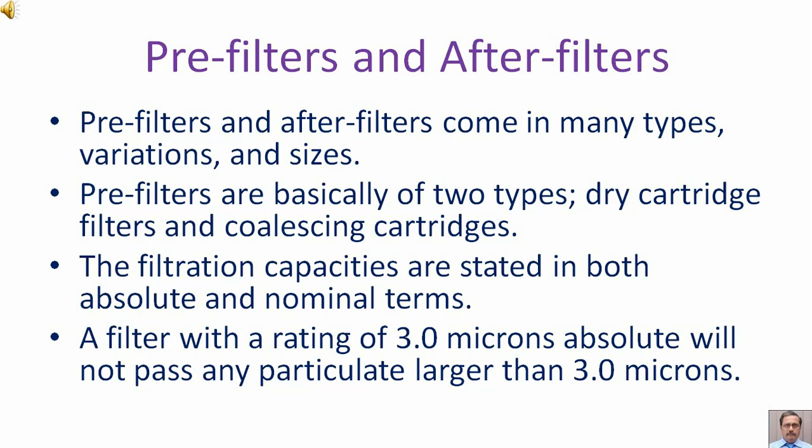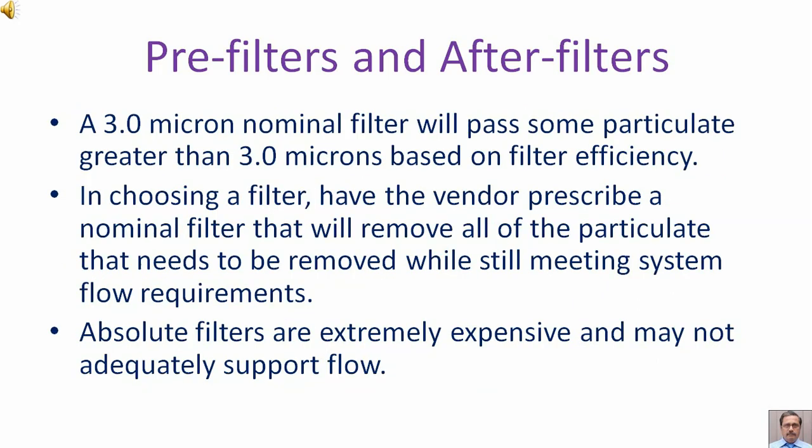Filter capacities are stated in both absolute and nominal terms. A filter with a rating of 3 microns absolute will not pass any particulate larger than 3 microns. A 3 micron nominal filter is rated based on filter efficiency. In choosing a filter, have the vendor prescribe a nominal filter that will remove all of the particulate that needs to be removed while still meeting system flow requirements. Absolute filters are extremely expensive and may not adequately support flow.